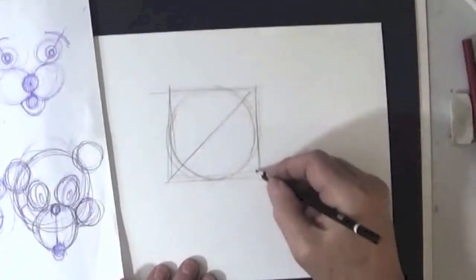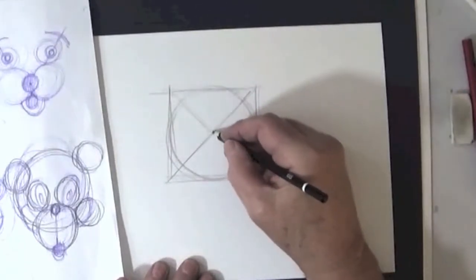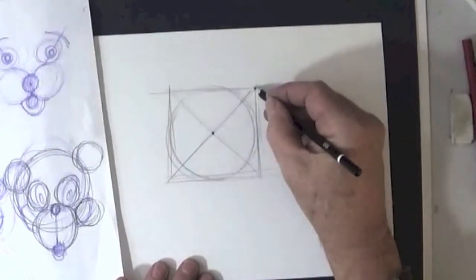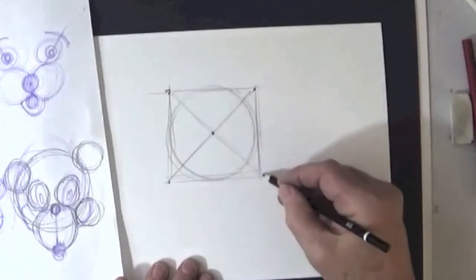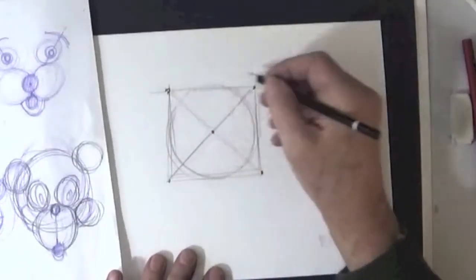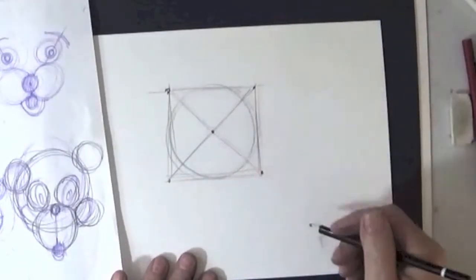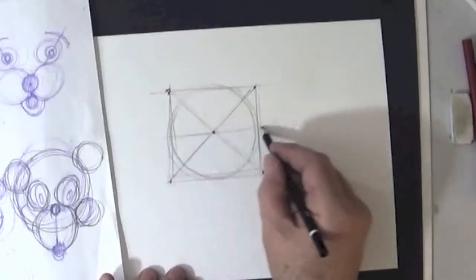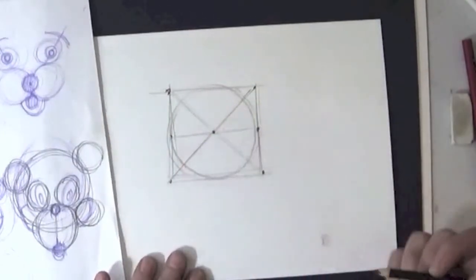There you'll see I found the center by combining the four corners. Now I have a center in my circle. I can go across and I can make some divisions.